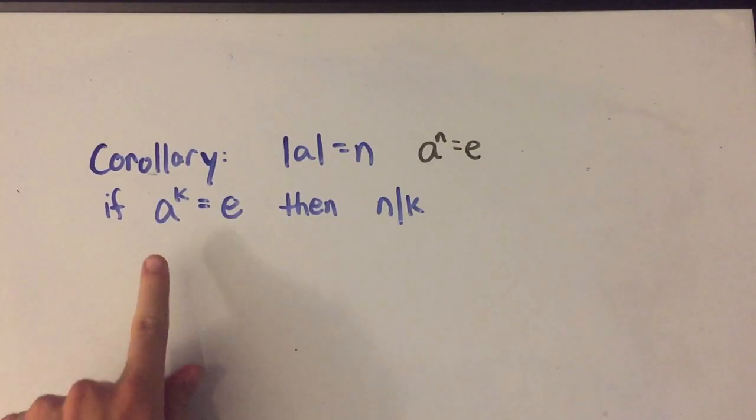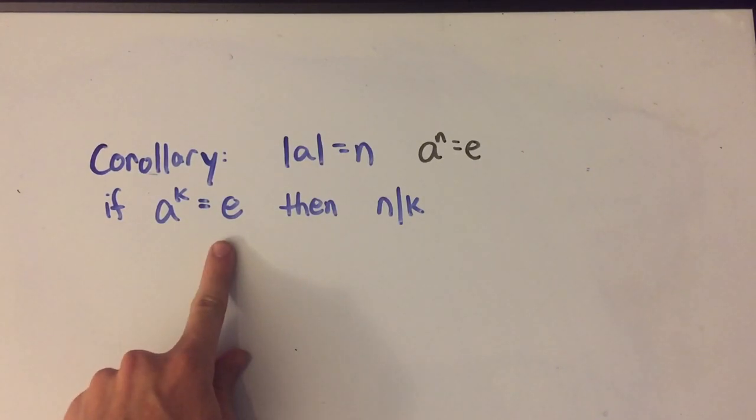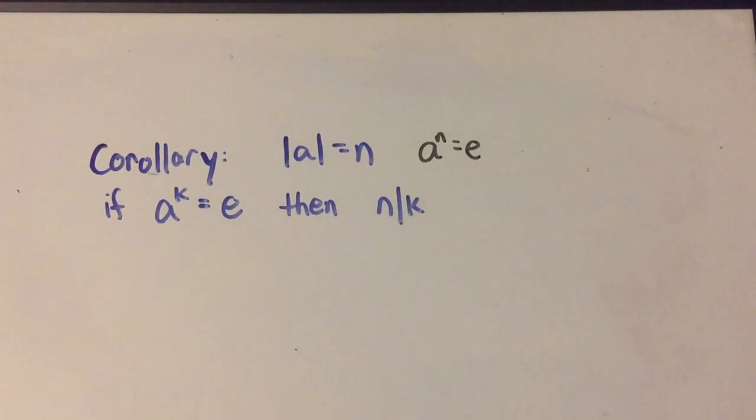So this statement says if I take a to the k is equal to the identity element then n divides k. Well why is that true?